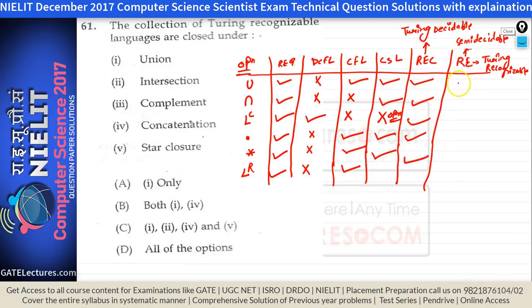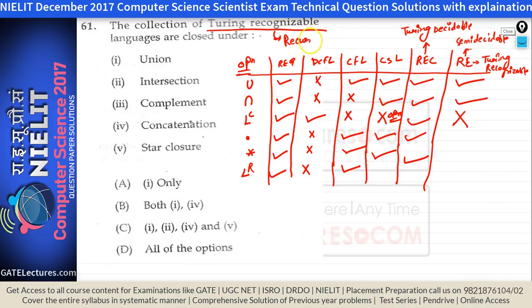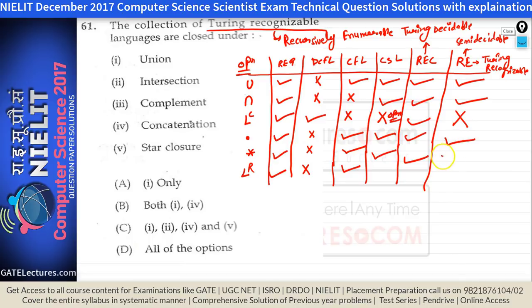Recursively enumerable languages are closed under union and intersection, but not closed under complementation. They are closed under concatenation and Kleene closure. No information is available for reversal. Since the question asks about Turing recognizable languages (same as recursively enumerable), options 1, 2, 4, and 5 are correct — answer C.